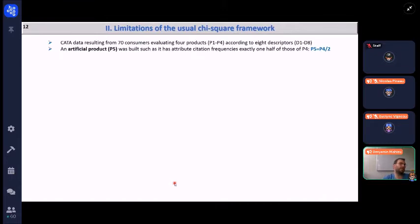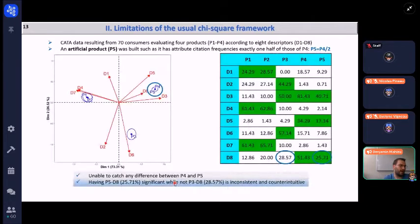From a practical point of view, what are the consequences of this limitation? I built an example from a CATA questionnaire where 70 consumers evaluated four products, P1 to P4, according to eight descriptors, D1 to D8, and I created an artificial product which I call P5, who has attribute citation frequencies exactly one half of those of P4.